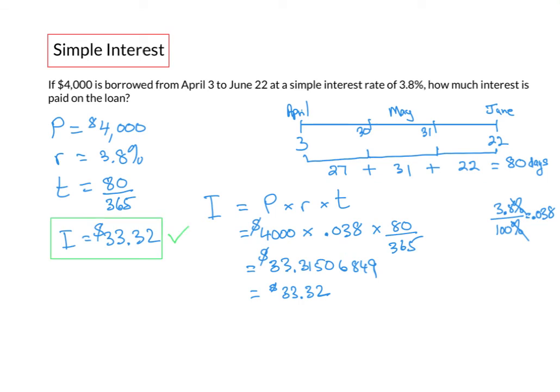So our interest we'll have to pay in addition is $33.32. So how much would we have to pay back? Let's extend this question a bit. We would need to pay back principal plus interest. So we have a formula. S stands for the simple maturity value is equal to the principal plus the interest.